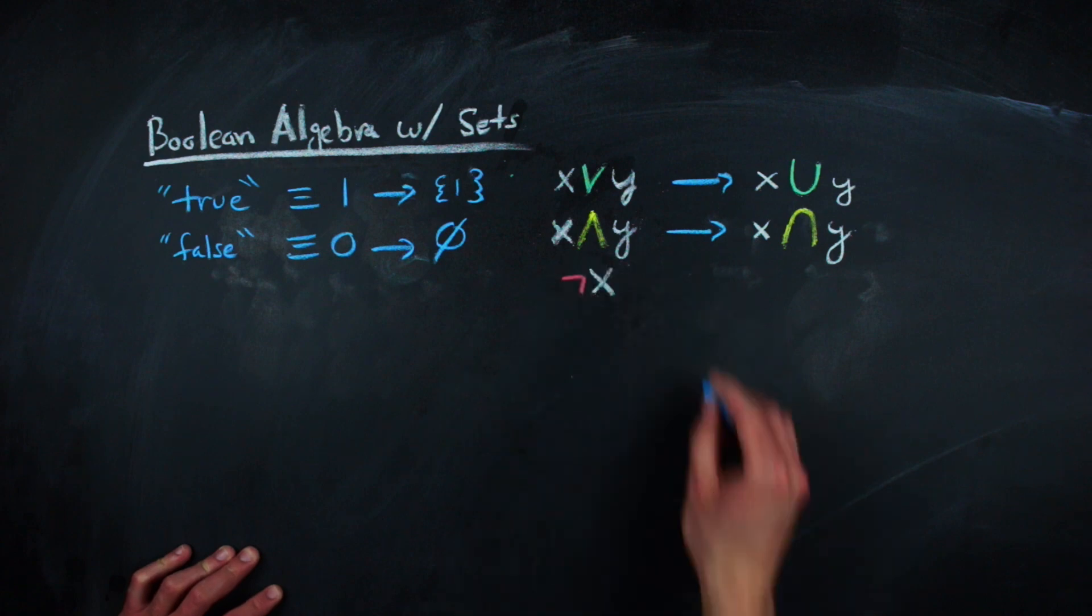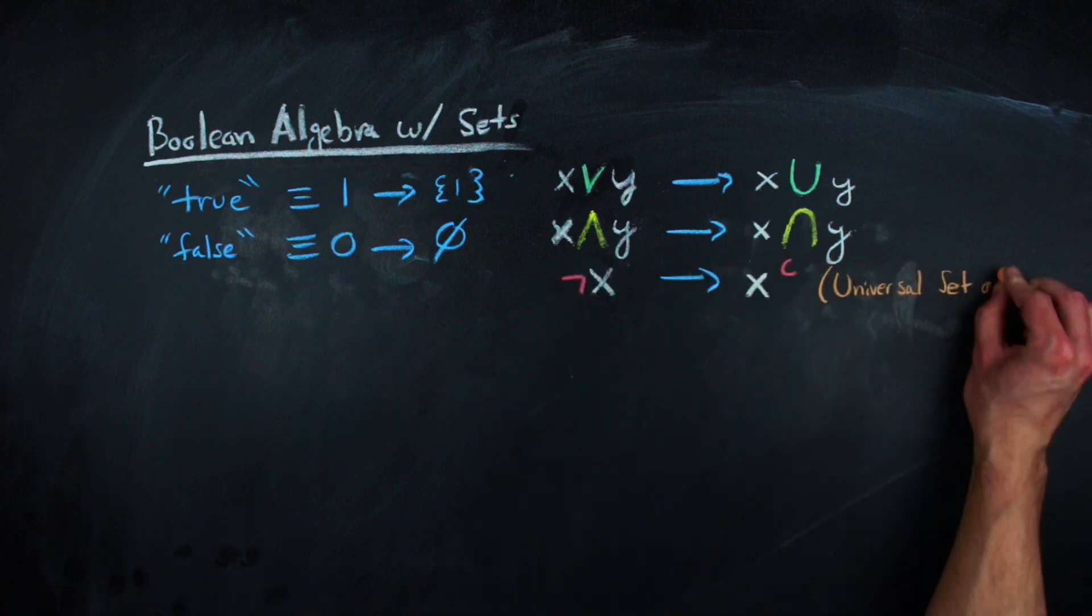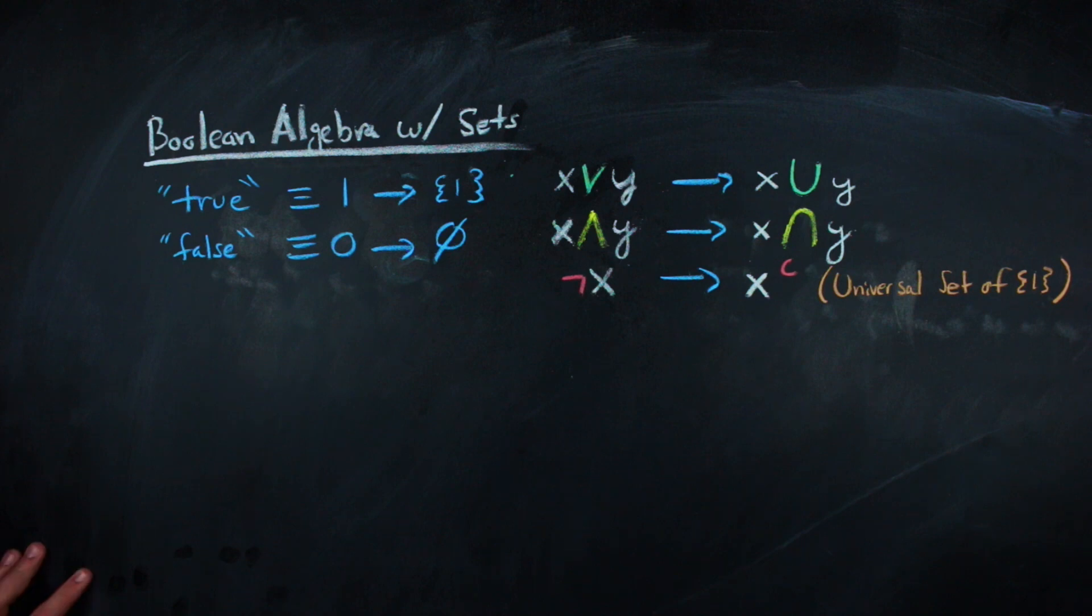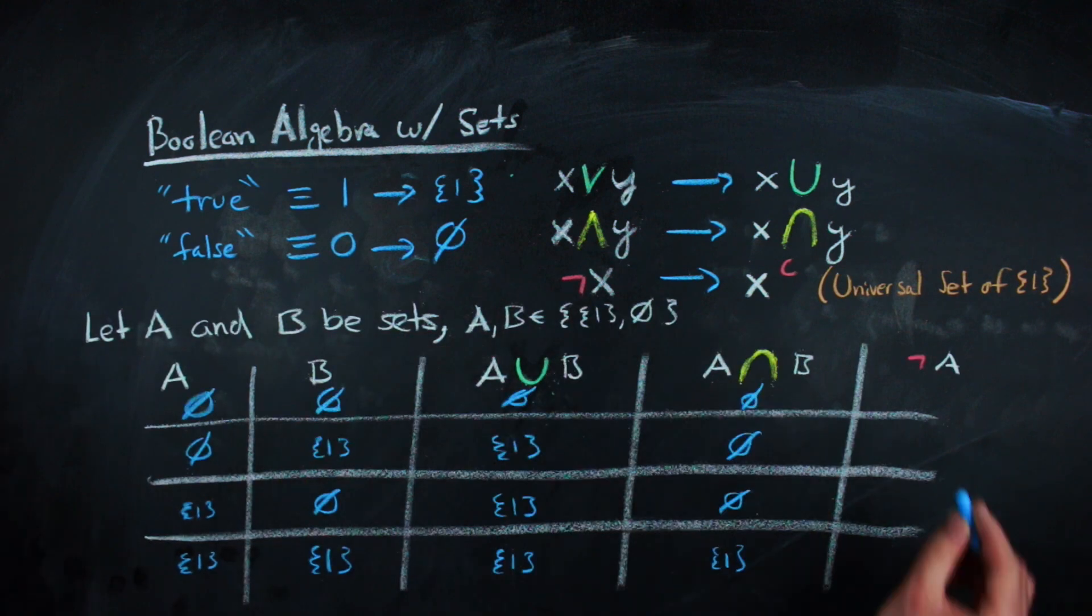And negations become complements, where the universal set for the complement operation is the set containing one. We can recreate the truth tables using set notation instead, and I'll do that here.